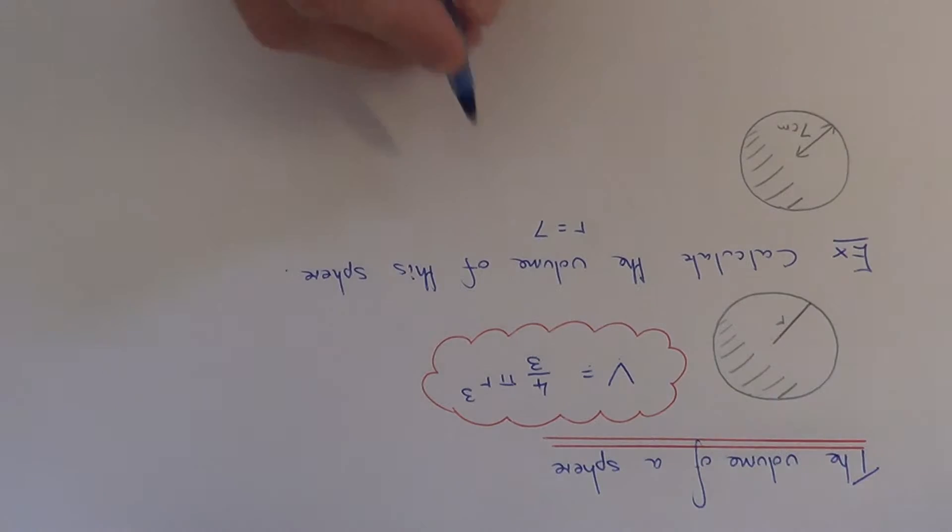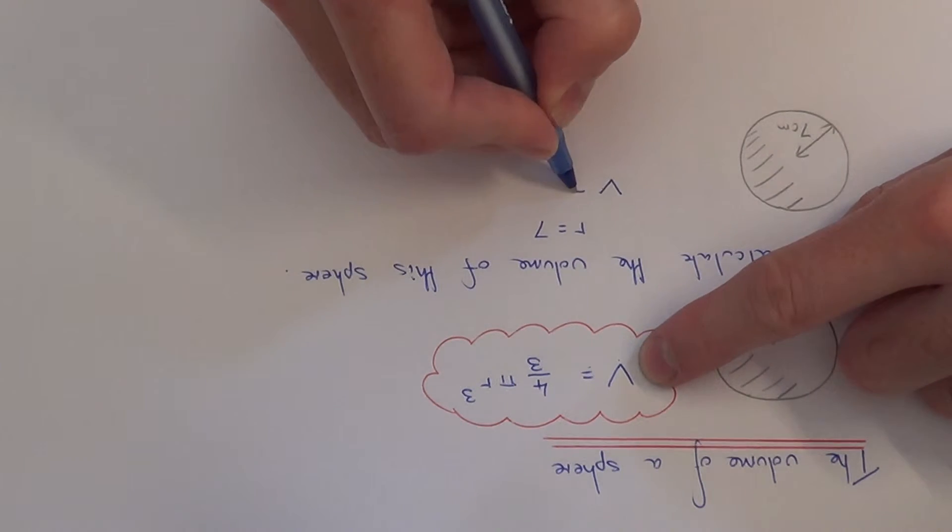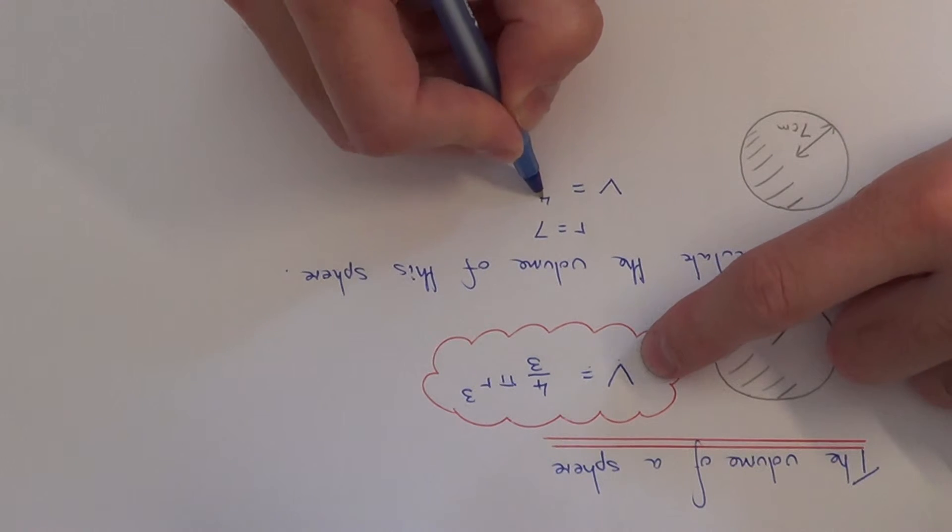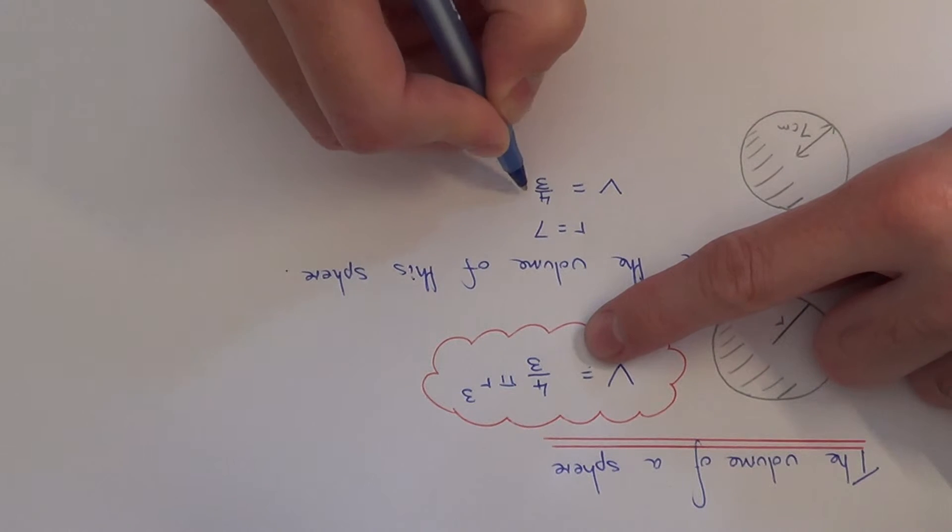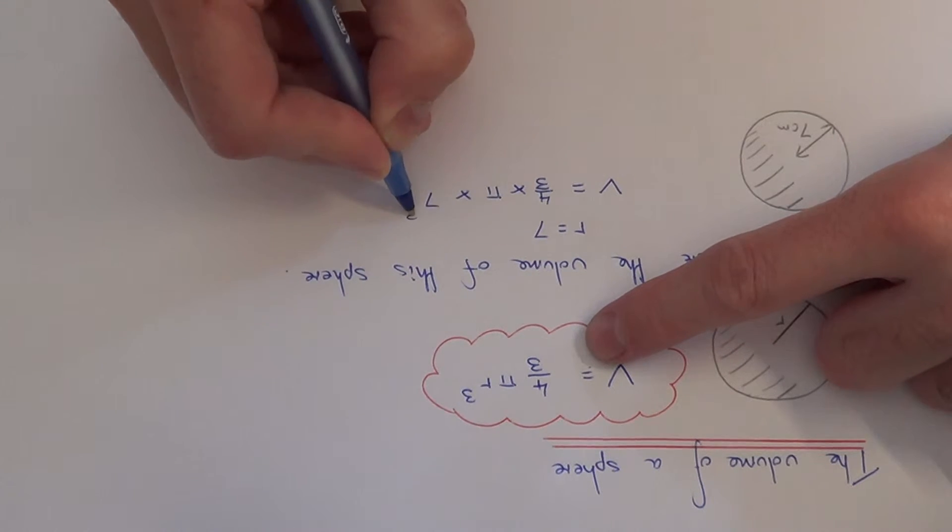We just need to substitute this into the formula above. So it would be V equals 4 thirds times pi times 7 cubed.